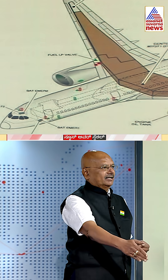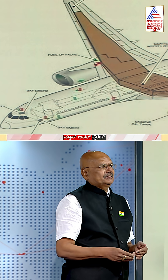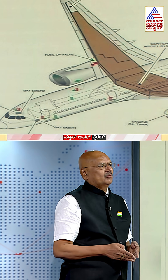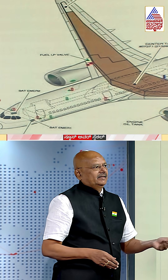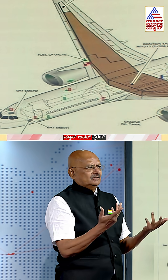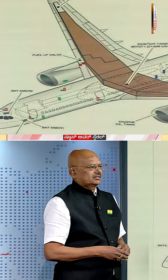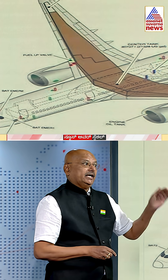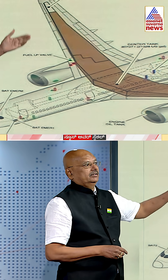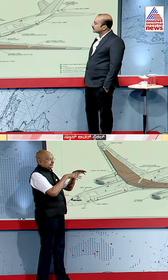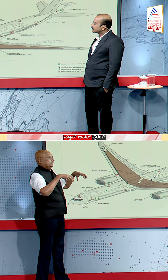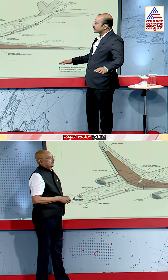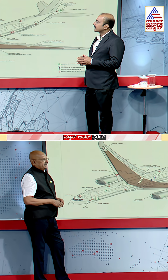Even on a short sector — suppose from here to Hubli, which is just 28 minutes — you still have to carry extra fuel, just to provide structural stability per wing.